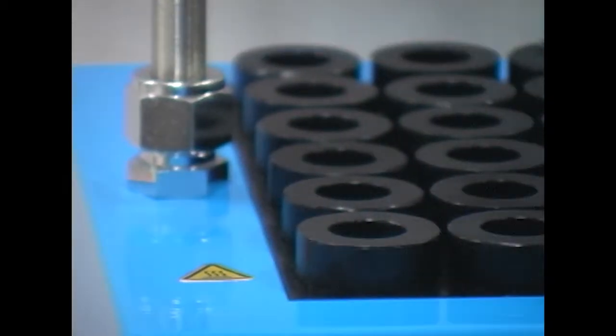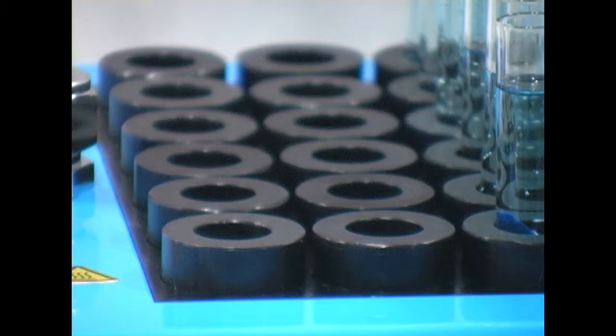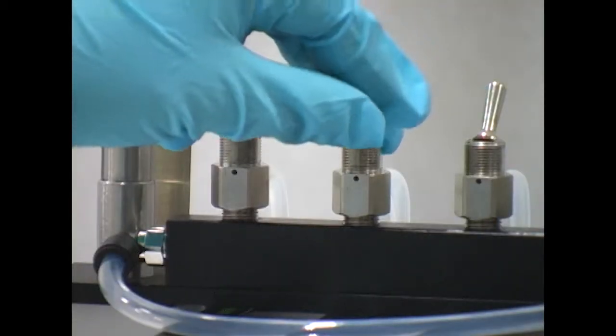When the user is operating the instrument with less than a full load, they can save valuable nitrogen gas by turning off any unfilled sample rows.